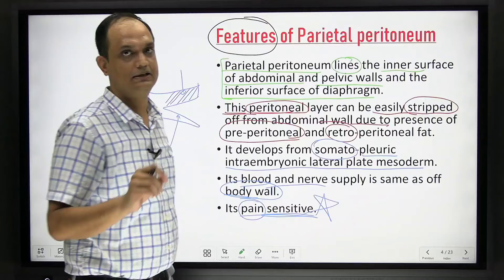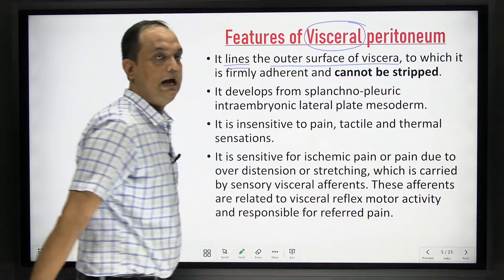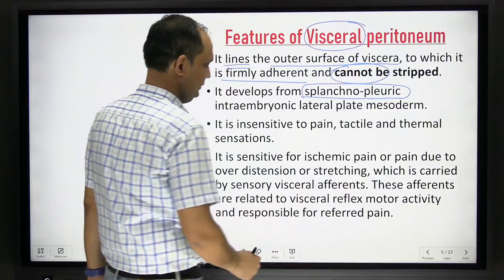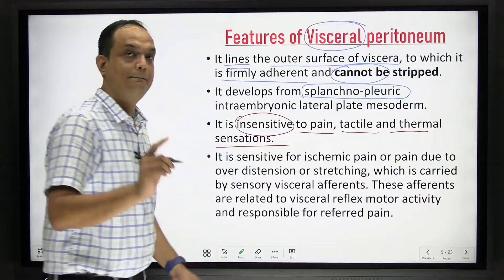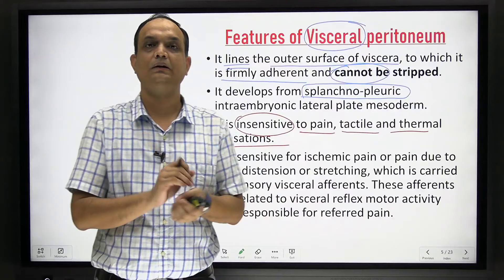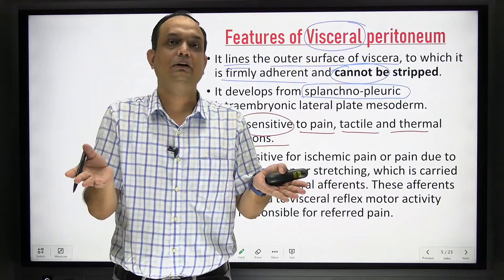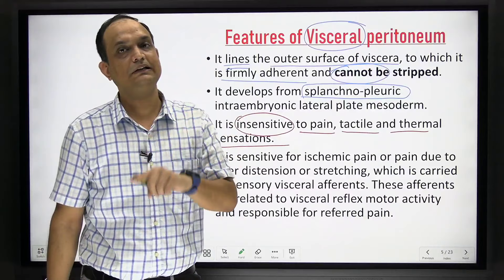What are the features of visceral peritoneum? Visceral peritoneum lines the outer surface of the viscera and is firmly adherent — so it cannot be stripped. It develops from splanchnopleuric mesoderm. It is insensitive to pain, tactile, and thermal sensation. If you cut the visceral peritoneum during surgery, the patient will not feel pain. After laparotomy, if you cut the intestinal lumen or stomach, it is not at all painful, because viscera and visceral peritoneum are not sensitive to cut-induced pain.